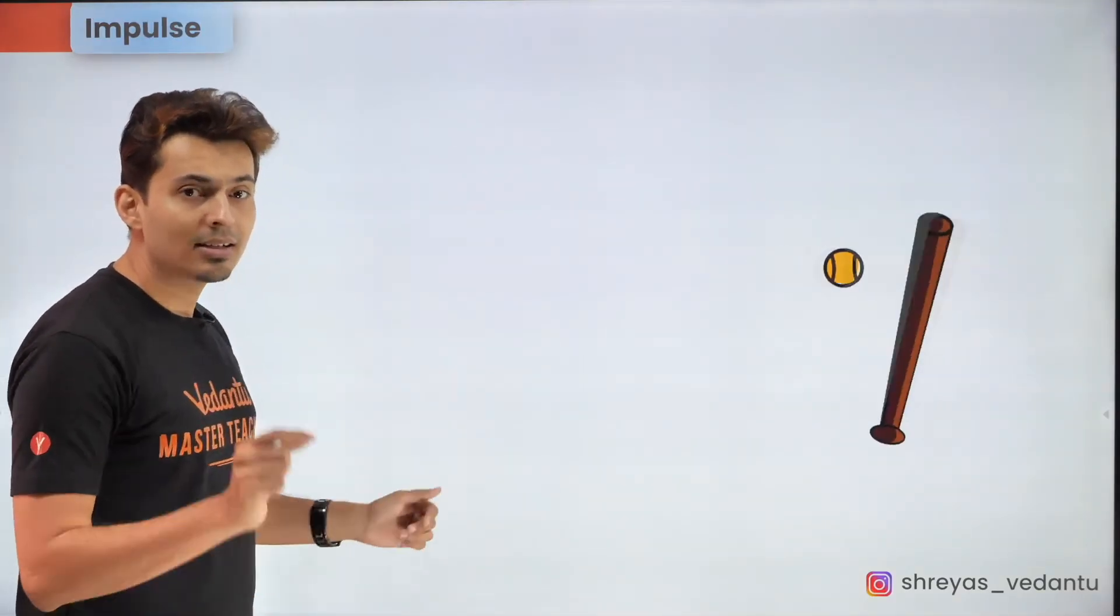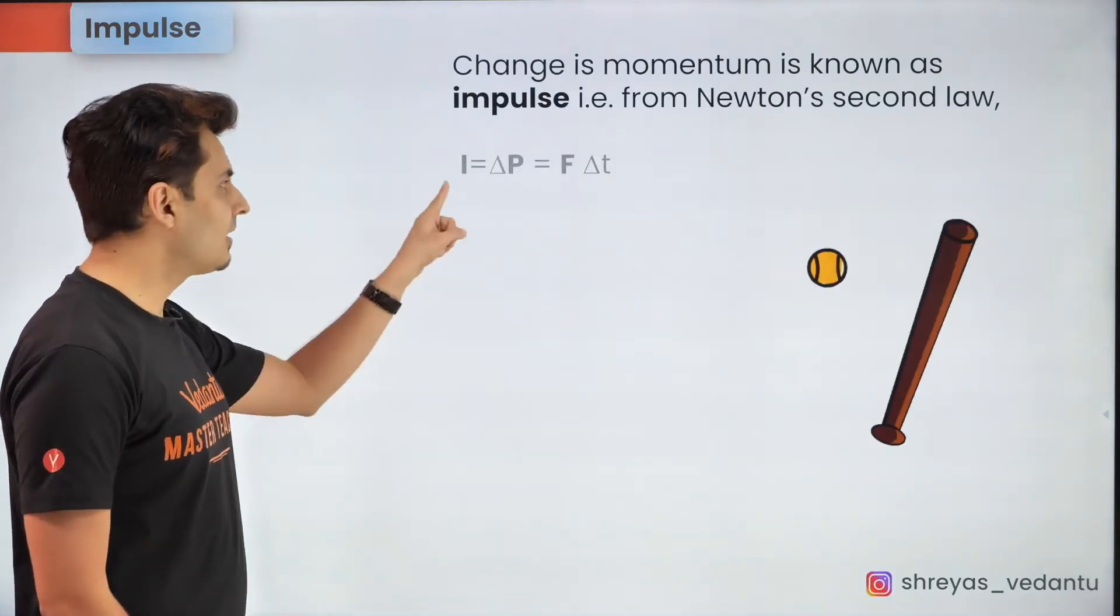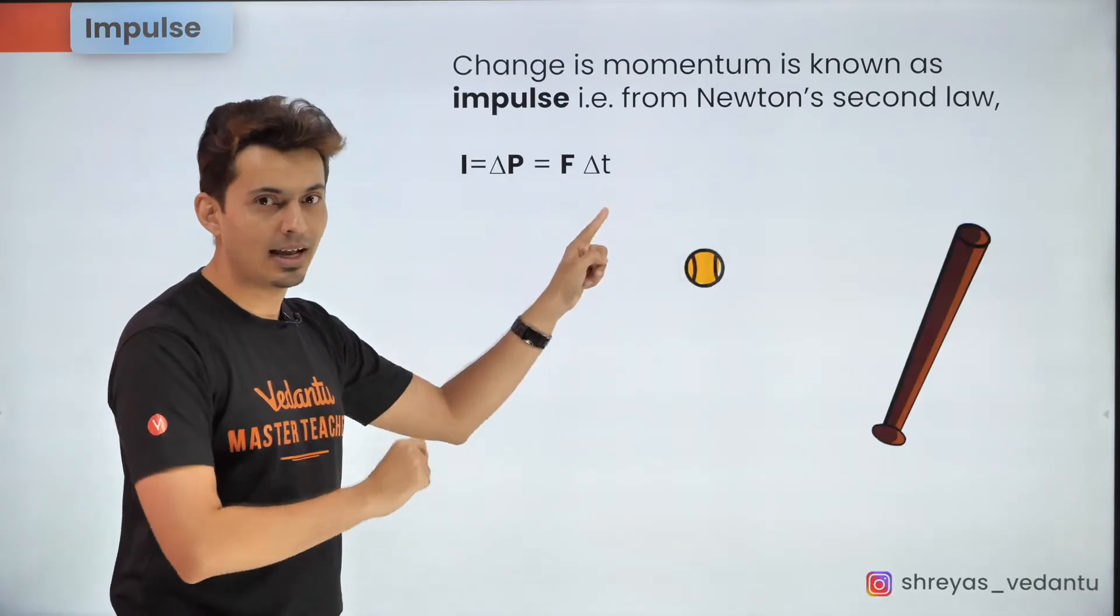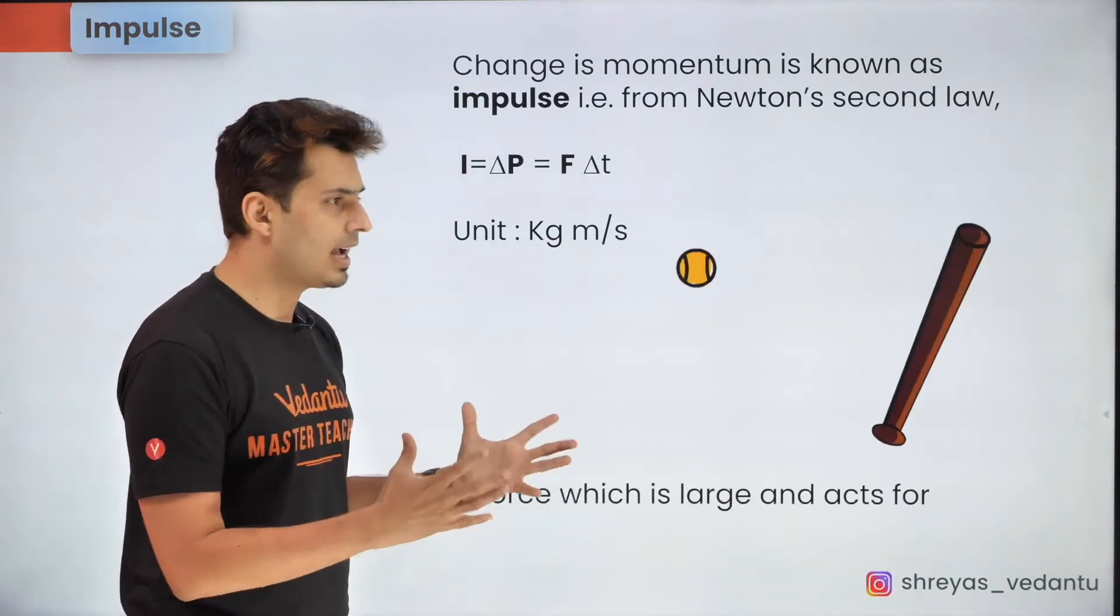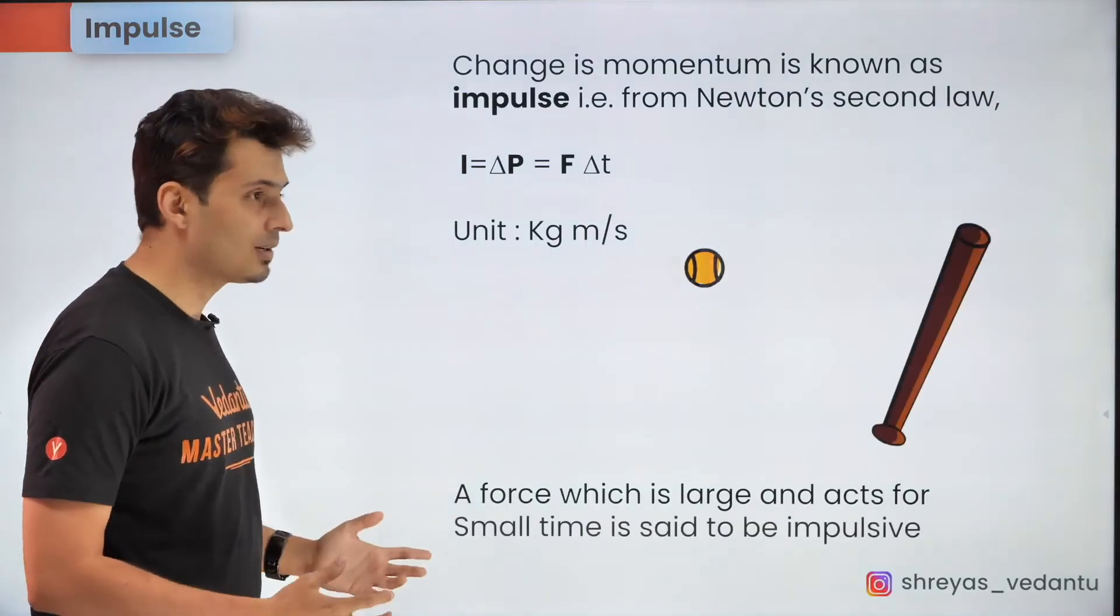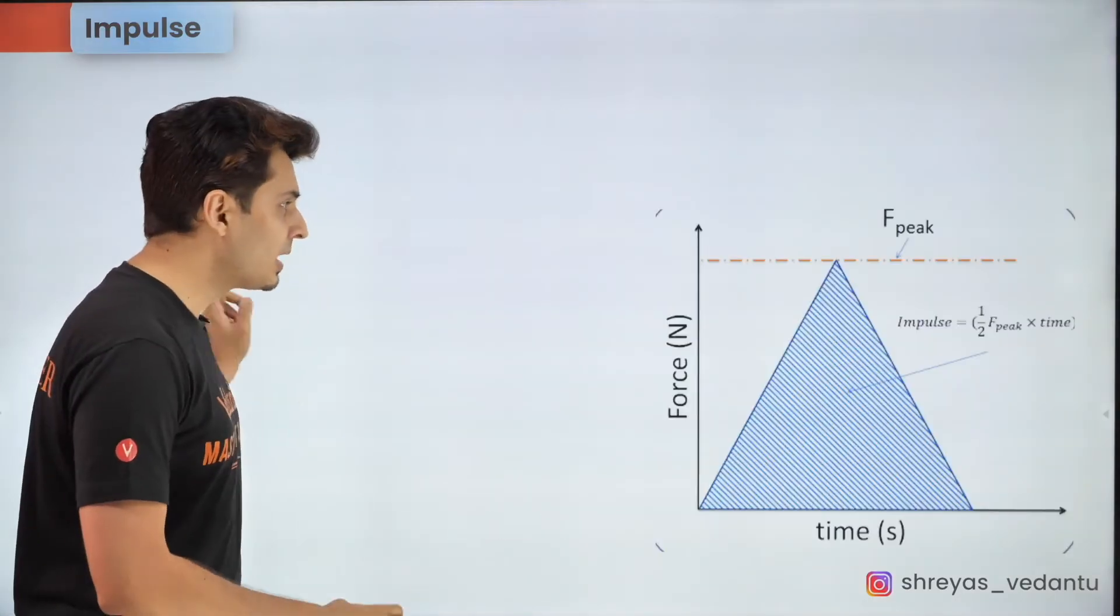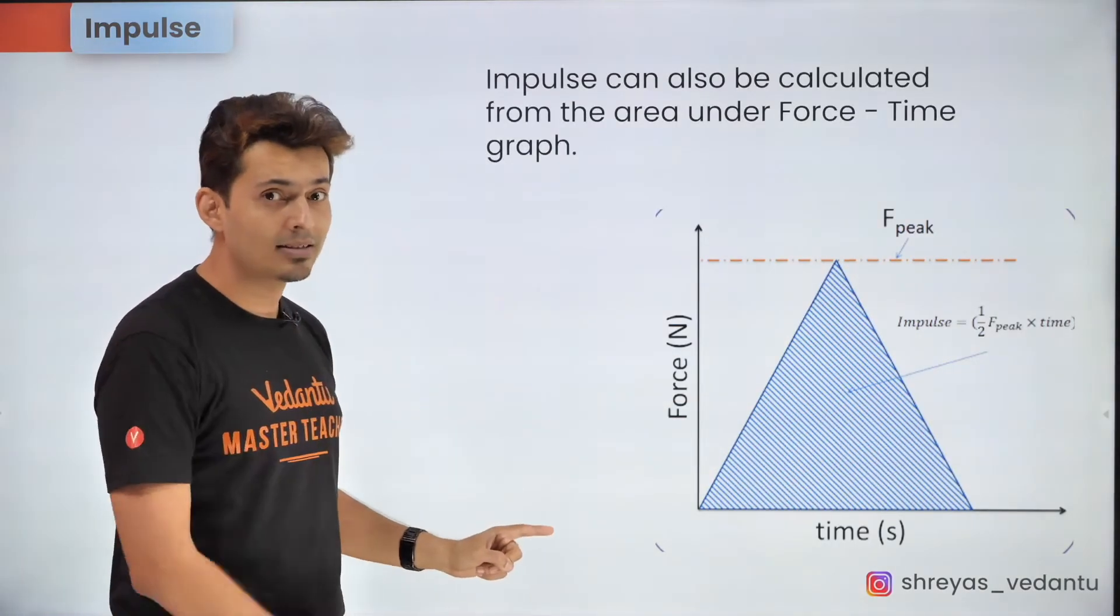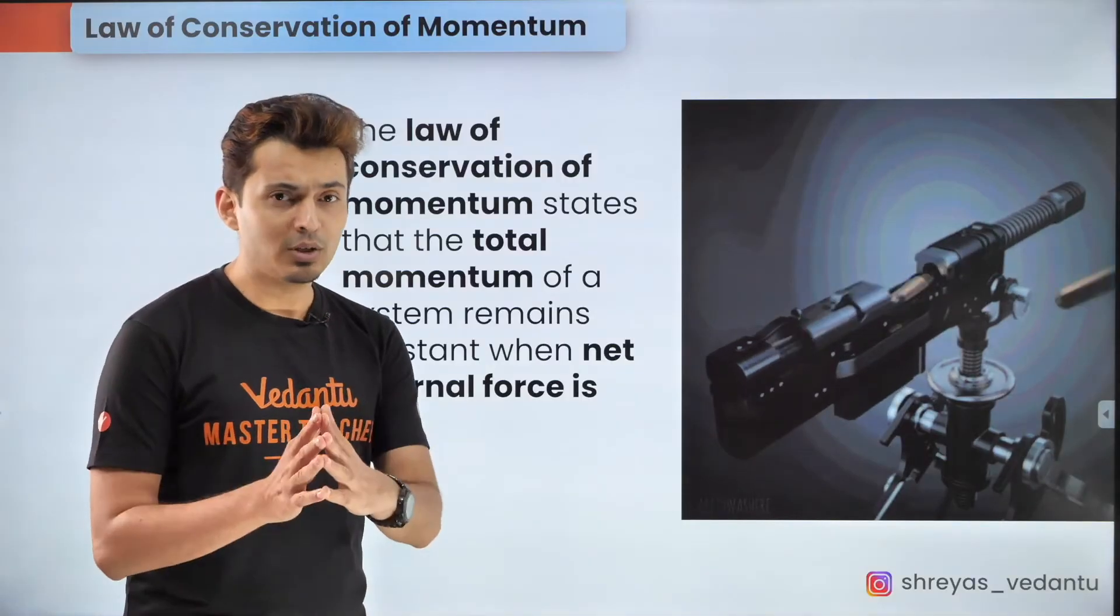Now if the momentum changes that quantity is called as impulse and it can be easily shown by Newton's second law that the impulse which is the change in momentum is also equal to the force which acts multiplied by the time interval for which it acts. The unit of impulse is same as the unit of momentum and when a large force acts for a very small time and changes the momentum significantly it is said to be impulsive in nature. All those forces which do not change the momentum significantly are said to be non-impulsive. Impulse can also be calculated by area under the force versus the time graph which also tells us that impulse is the integral of force with respect to time.